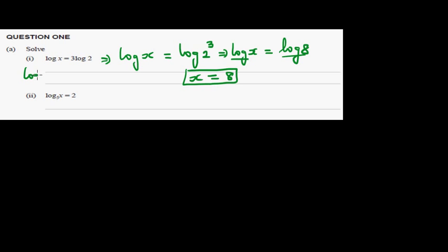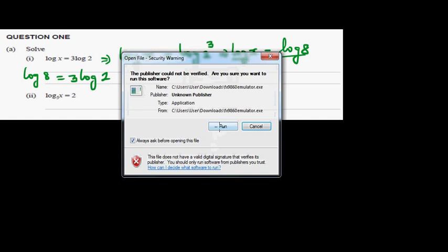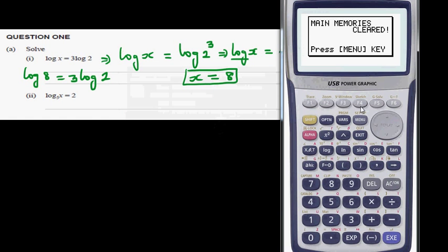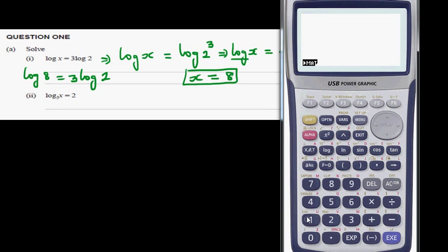This means log of 8 is the same as 3 log 2, or 3 times log 2. Let's confirm this on a calculator: enter log 8, then enter 3 log 2 — both give the same number, so this answer is correct.